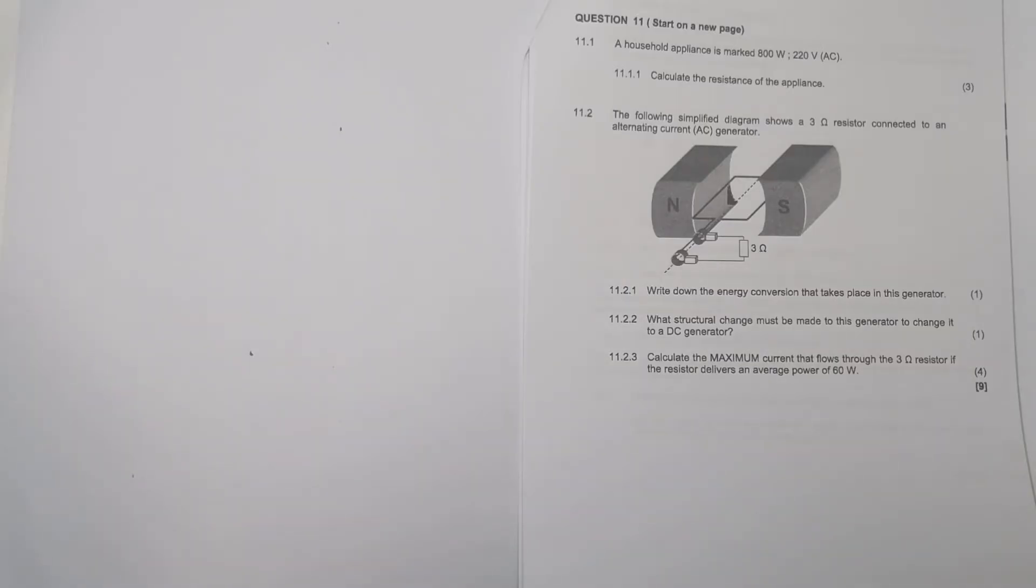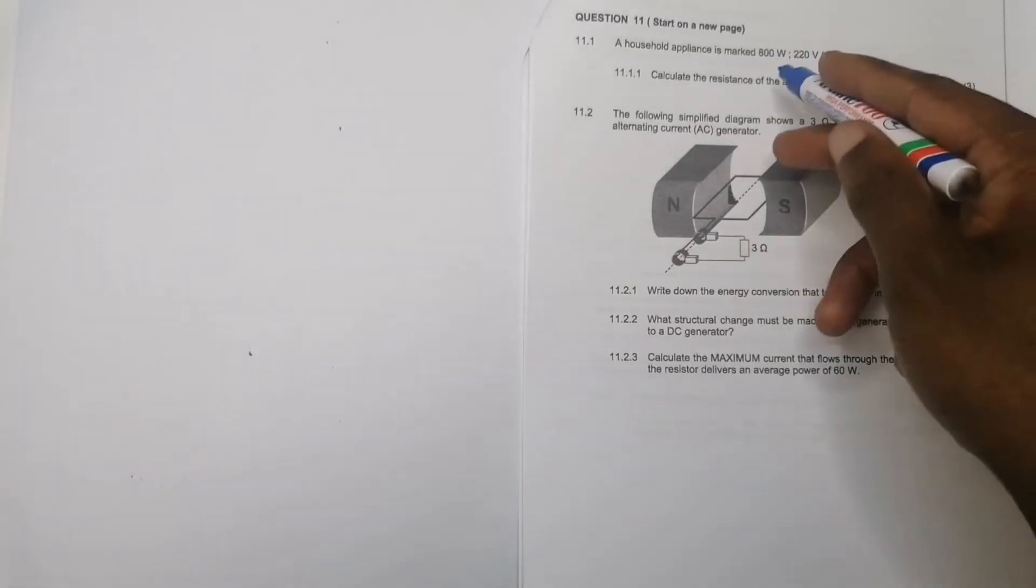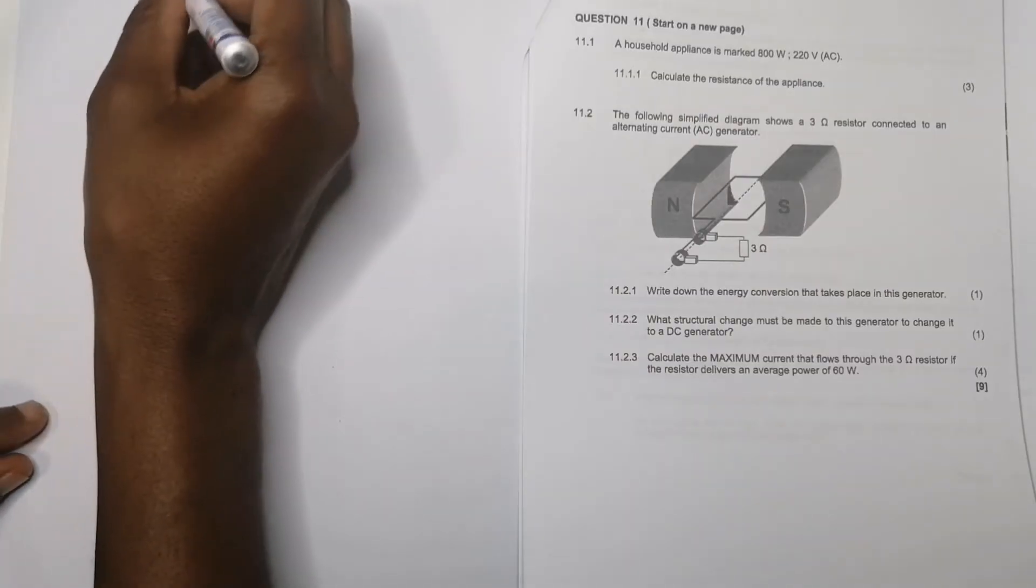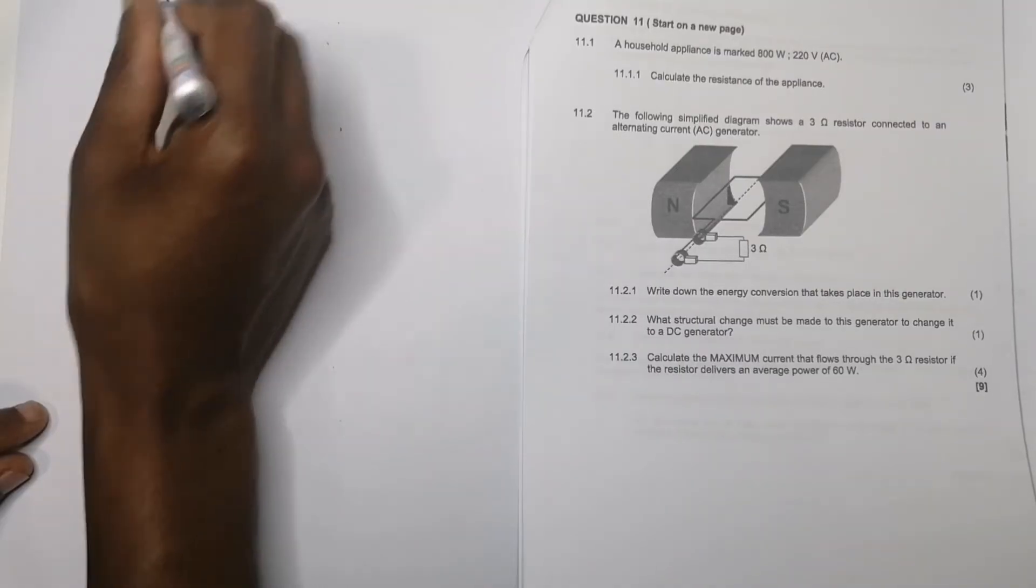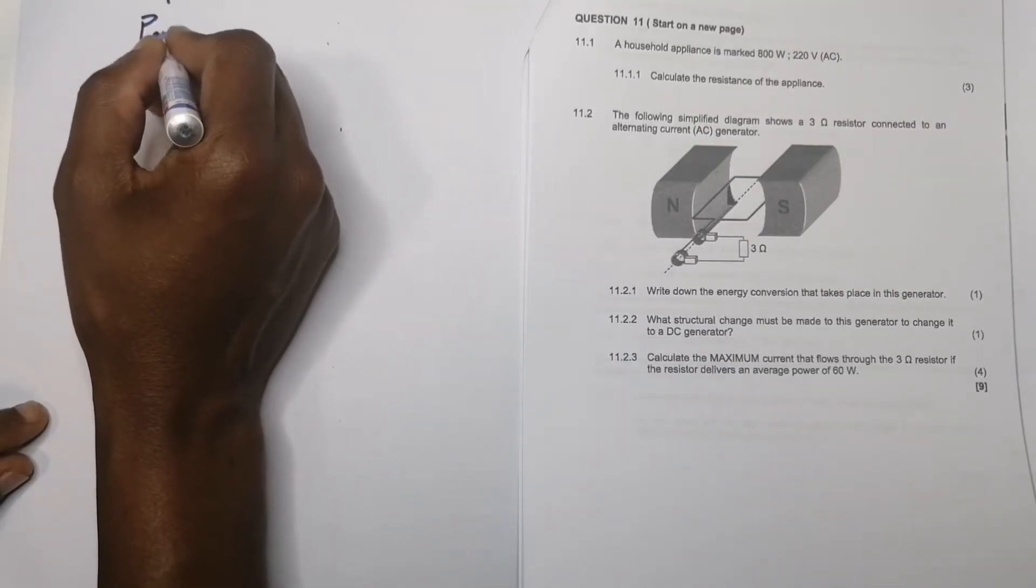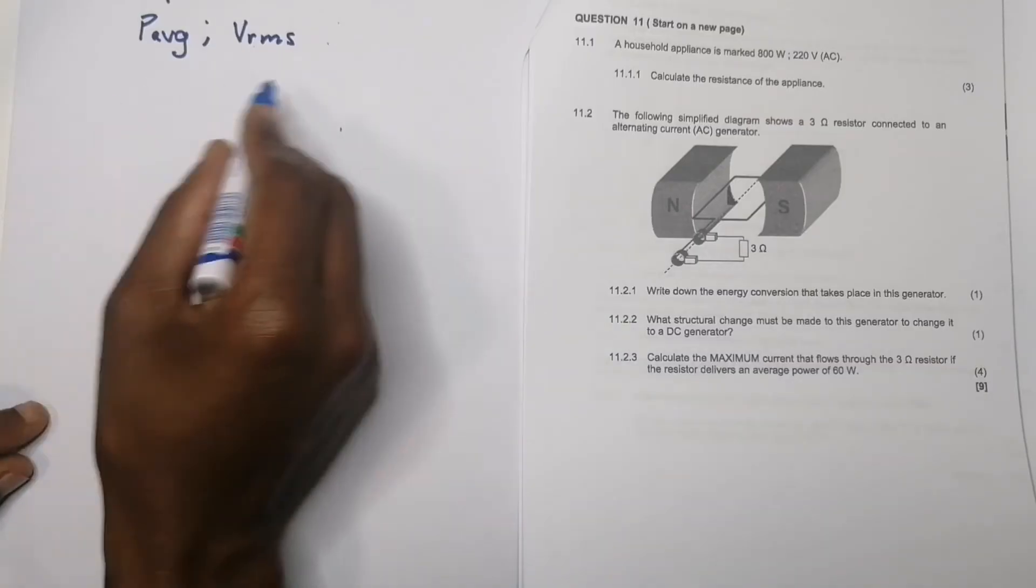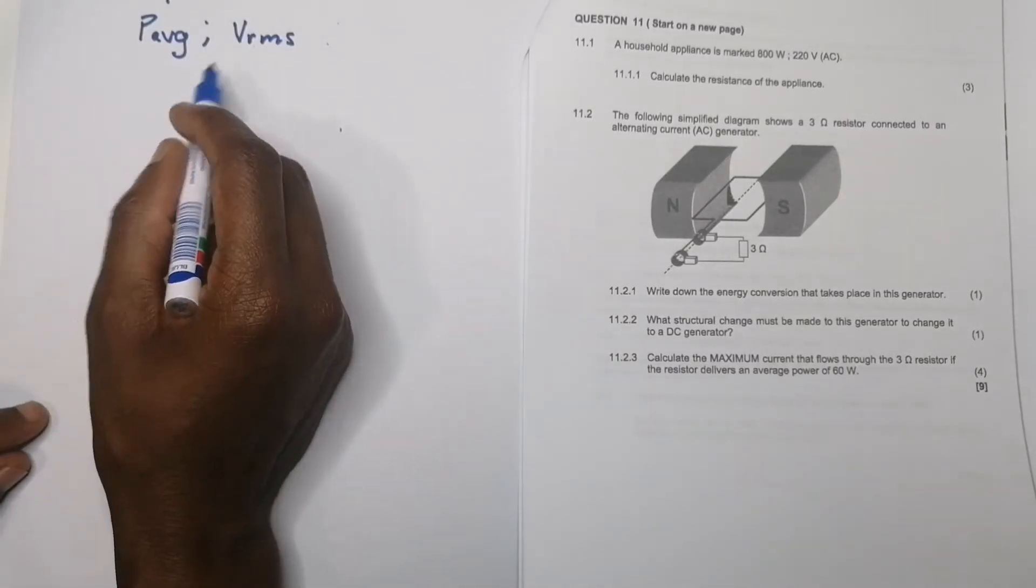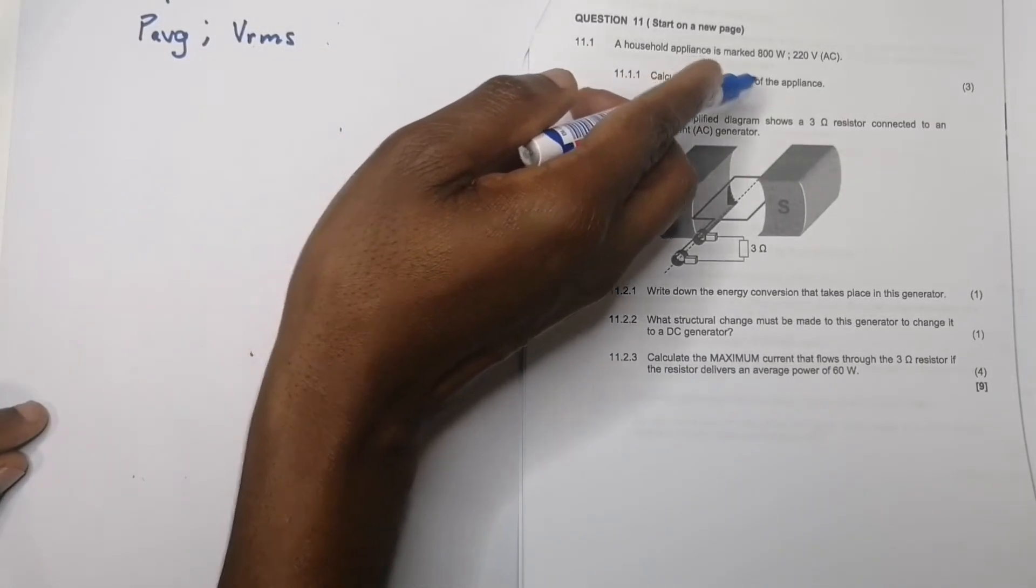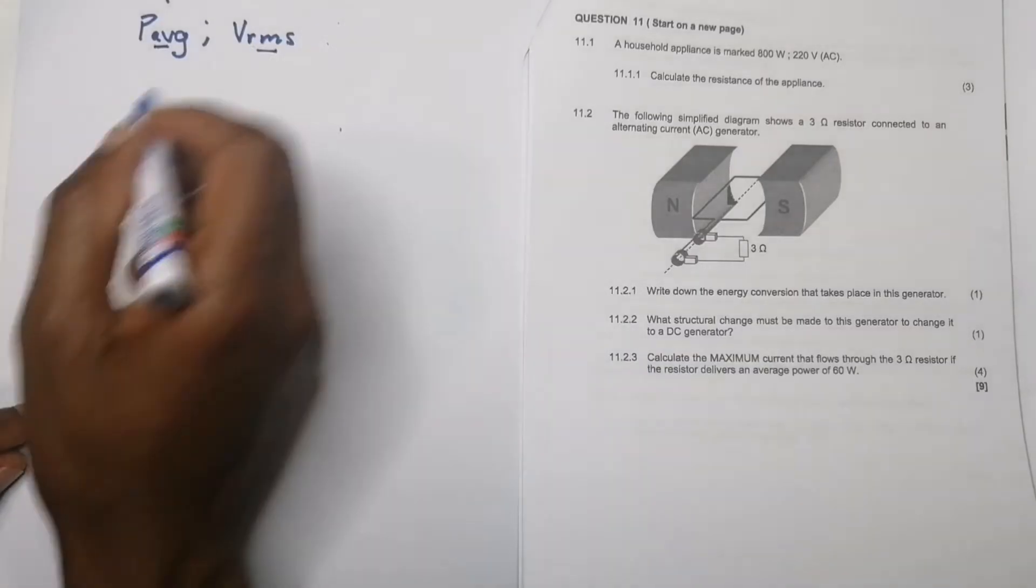Okay, so a household appliance is marked 800 watts and 220 volts. Please remember when they give you a power rating like that, just keep in mind that it will always be the average power, so it will be P average as well as V rms. When they give you that power rating, it's the rms voltage as well as the average power. They say to you, calculate the resistance of the appliance.